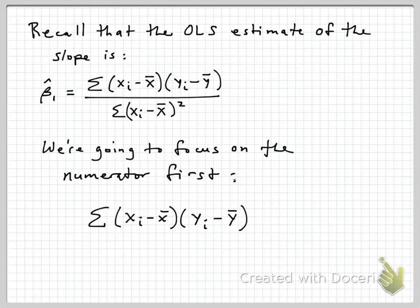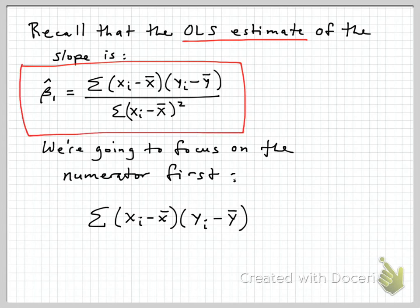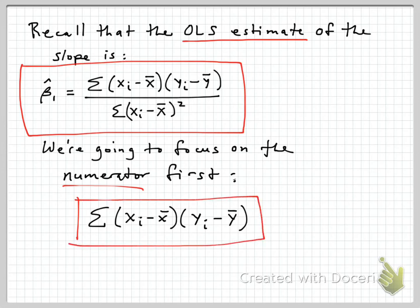We need to start with the formula for the ordinary least squares estimate of the slope, and that is this expression. Beta 1 hat is essentially the ratio of the covariance of x and y to the variance of x. We're going to focus on the numerator part first, because that's really where the action is. That sum across all observations in the sample from i equals 1 to n of xi minus its mean times yi minus its mean — we're going to take a look at what that is.